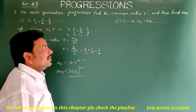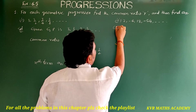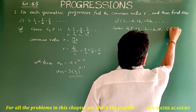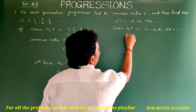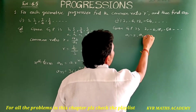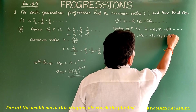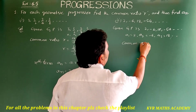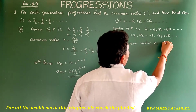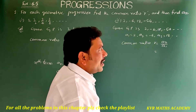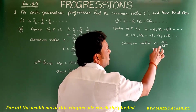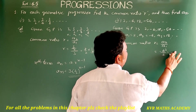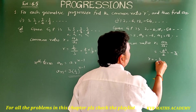Coming to the second one: the given GP is 2, -6, 18, -54, and so on. Here a1 = 2, a2 = -6, a3 = 18, and so on. Now for the common ratio, r = a2/a1 = -6/2 = -3. So r is equal to -3.